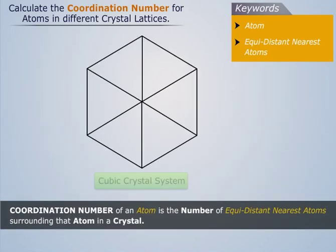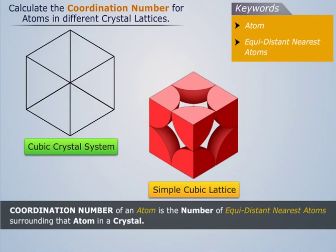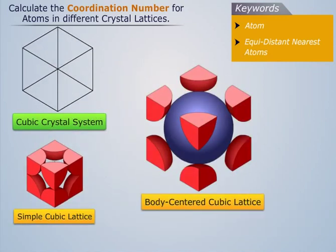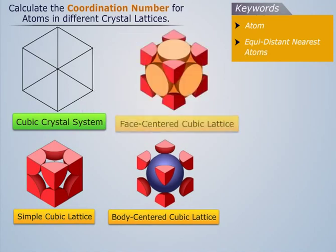Let's consider a cubic crystal system. It can have three Bravais lattices: simple cubic lattice, body-centered cubic lattice, and face-centered cubic lattice.